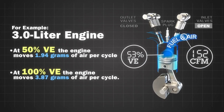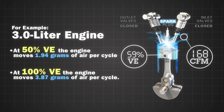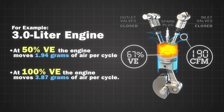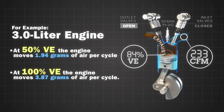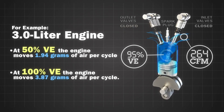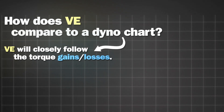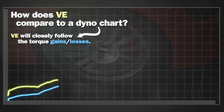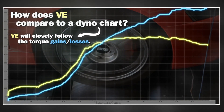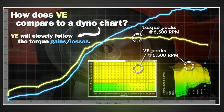Volumetric Efficiency is just how efficient the engine is at packing those air molecules into that volume. The higher the VE, the more efficient the engine is, the more air it's moving, thus it's making more power. You'll notice many times that your VE table looks a lot like your dyno graph, and that's no mistake. The more air you're moving, the more torque you're going to make. And a lot of times at peak torque, you're going to be right around 100% VE, and that's no coincidence.